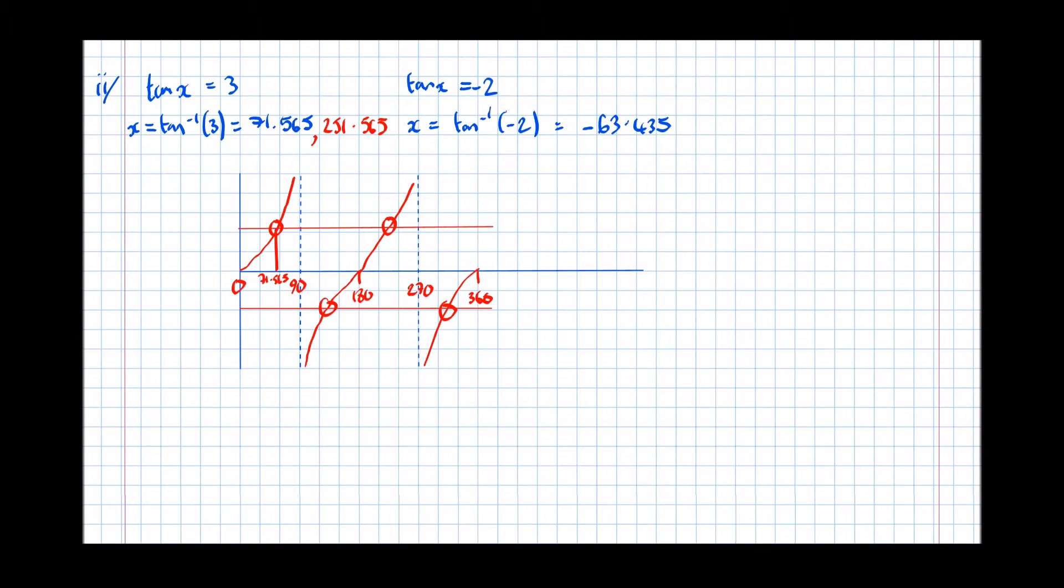However, minus 63.435 isn't on our graph. So we're going to have to roughly extend it. So there's our line extended. And there we go. There's roughly minus 63.435, which is an invalid solution but it leads us to two valid solutions.